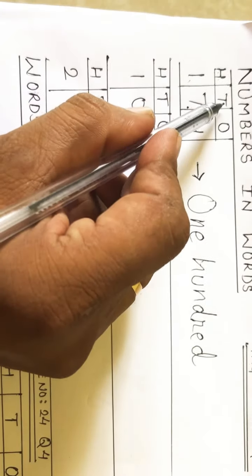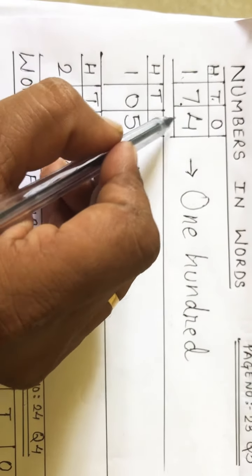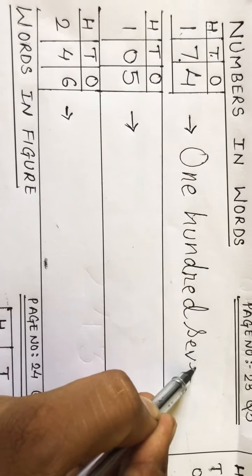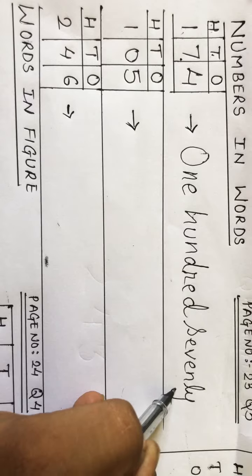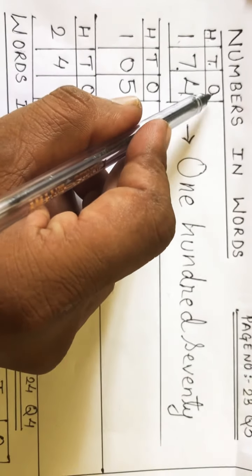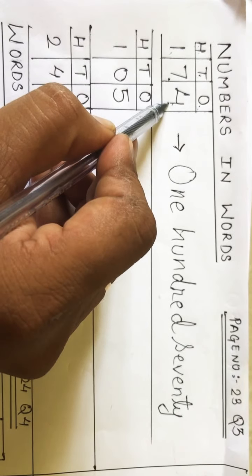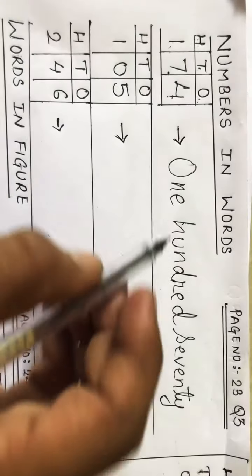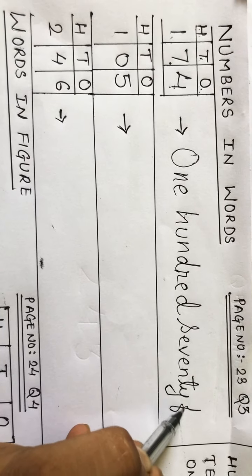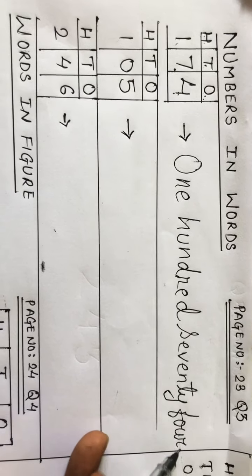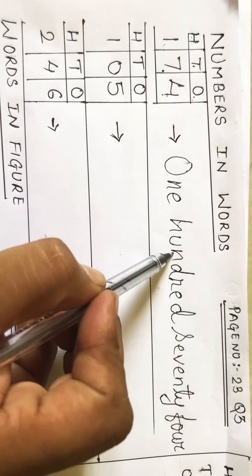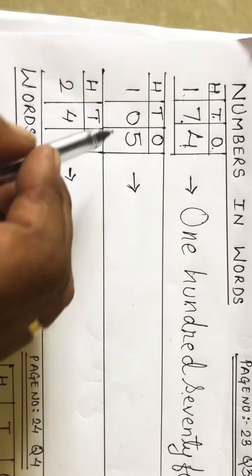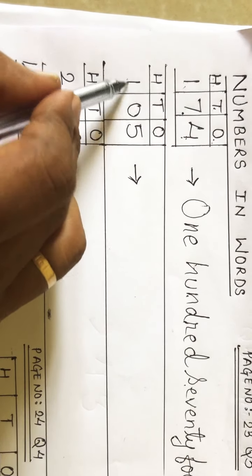Then seven is at tens place, so its place value will be seventy — we will write 'seventy.' And last, four is at ones place. The digit at the ones place keeps its own value, so four remains as it is — we write F-O-U-R. So the answer will be 'one hundred seventy four.'